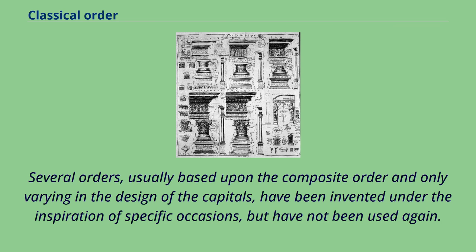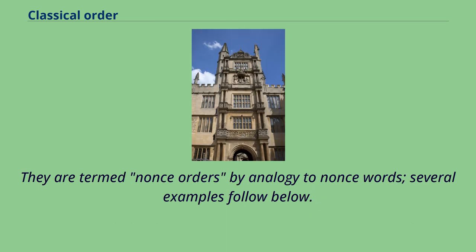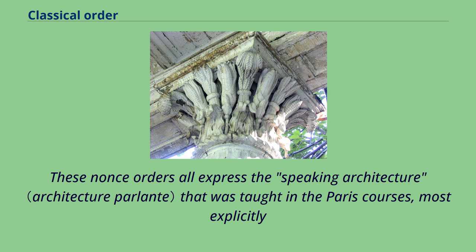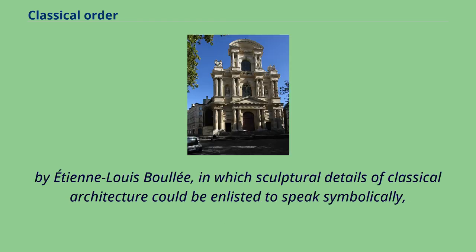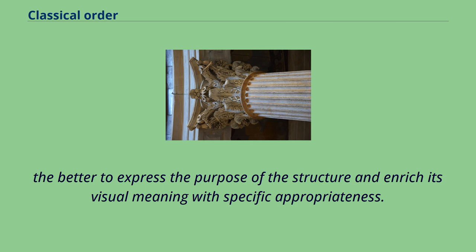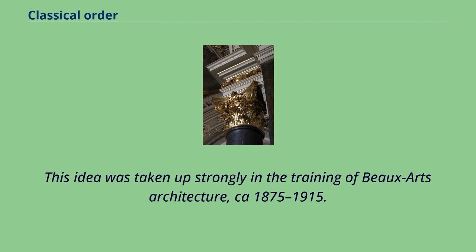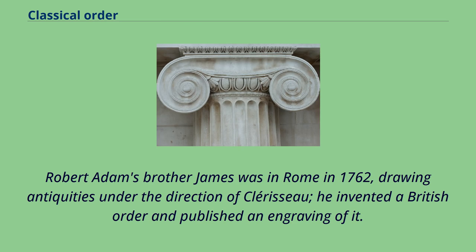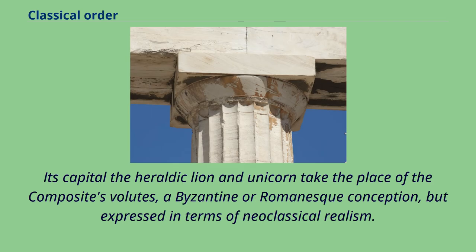Several orders, usually based upon the Composite order and only varying in the design of the capitals, have been invented under the inspiration of specific occasions but have not been used again. They are termed nonce orders, by analogy to nonce words. These nonce orders express the 'speaking architecture' taught in Paris courses, most explicitly by Étienne-Louis Boullée, in which sculptural details of classical architecture could be enlisted to speak symbolically to express the purpose of the structure. This idea was taken up strongly in the training of Beaux-Arts architecture, c. 1875–1915. James Adam, brother of Robert Adams, was in Rome in 1762 drawing antiquities under the direction of Clérisseau. He invented a British order with a capital where the Heraldic Lion and Unicorn take the place of the Composite's volutes — a Byzantine or Romanesque conception expressed in terms of neoclassical realism.